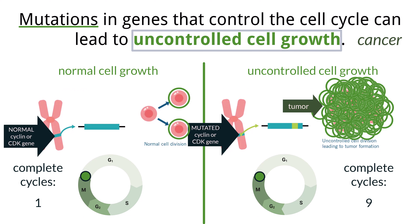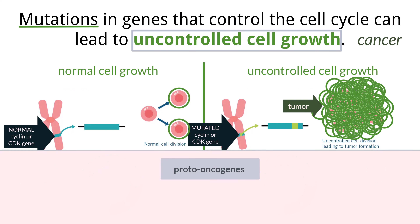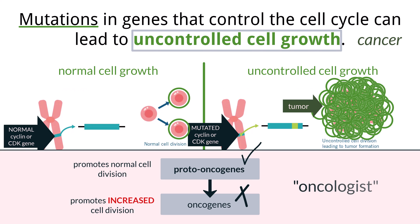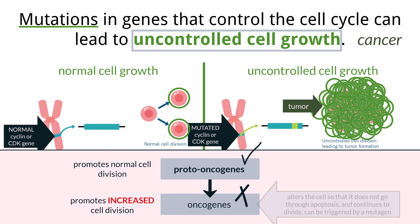There are genes called proto-oncogenes that can become oncogenes. Proto-oncogenes encode proteins that encourage normal cell division. Mutations in proto-oncogenes can cause them to become oncogenes, which causes an increase in cell division and possibly cancer. When you see the prefix 'onco,' think cancer — a doctor that treats cancer is called an oncologist. Usually, cells will undergo programmed cell death called apoptosis, where they no longer function and are broken down and recycled. Oncogenes change apoptosis so the cell keeps undergoing mitosis.